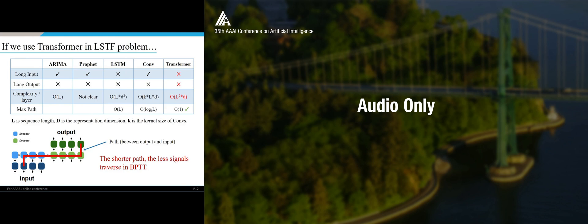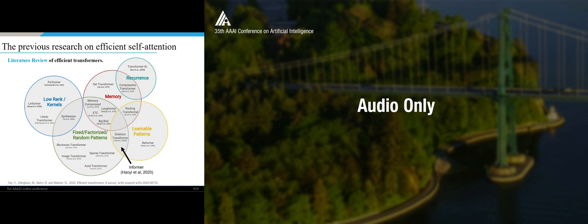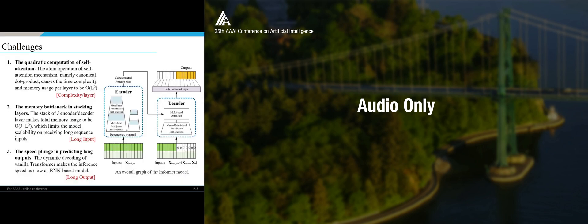So our question is how to solve that. Before further going on, we will point out that our work Informer, specifically, the prob sparse self-attention lies at the relevant patterns of sparse transformers. We notice that other contributions are beyond the scope of efficient transformer or efficient self-attentions. But the prob sparse self-attention is around this part. Okay, let's go to the details. Since there are three drawbacks, we follow in with three challenges, and we tackle them separately with different strategies. And here is the overall graph of the Informer model.